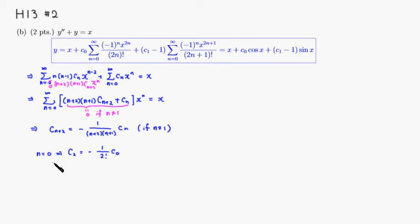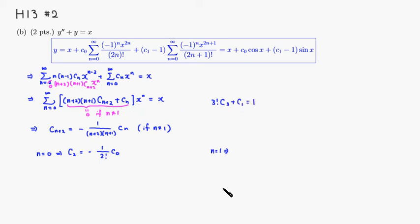For n equals 1, we have to handle it differently. We get 3 times 2 times c3 plus c1 equals 1 (since the coefficient of x must equal 1). So 3 factorial times c3 plus c1 equals 1, and solving: c3 equals negative c1 plus 1 all over 3 factorial.